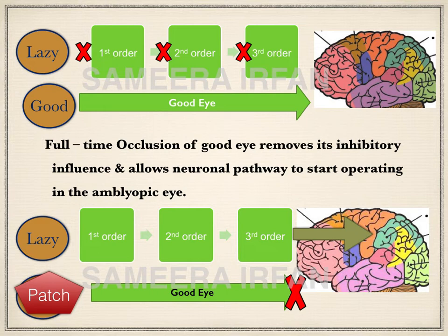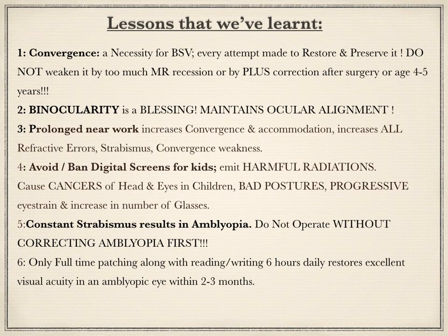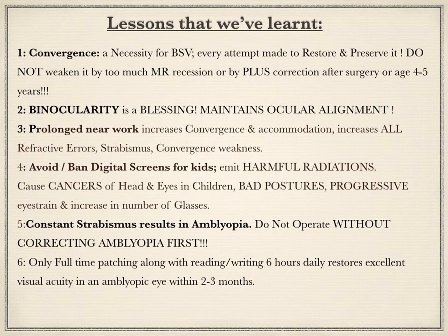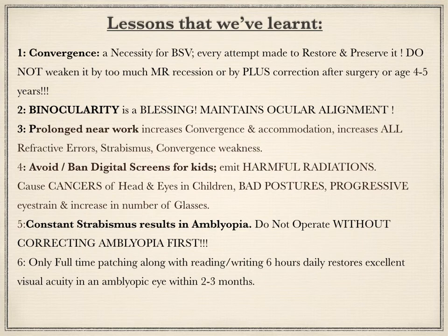Once the vision has been restored and then strabismus surgery is performed, the ocular alignment stays for the whole life of the patient. The important lessons from this lecture are: convergence is a necessity for binocular single vision and every attempt must be made to preserve and restore it. Convergence must not be weakened too much by recession of the medial rectus or by varying a plus or hypermetropic correction after surgery or after the age of four to five years in children. Binocularity is a blessing and it maintains ocular alignment. Prolonged near work increases convergence and accommodation demands, inducing blurring and increasing all refractive errors, strabismus, and convergence weakness.